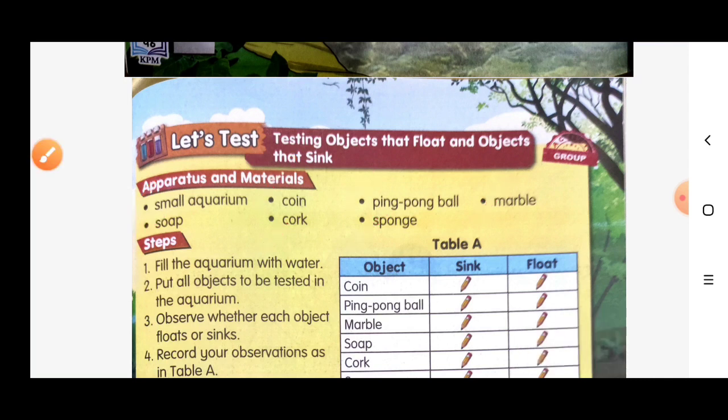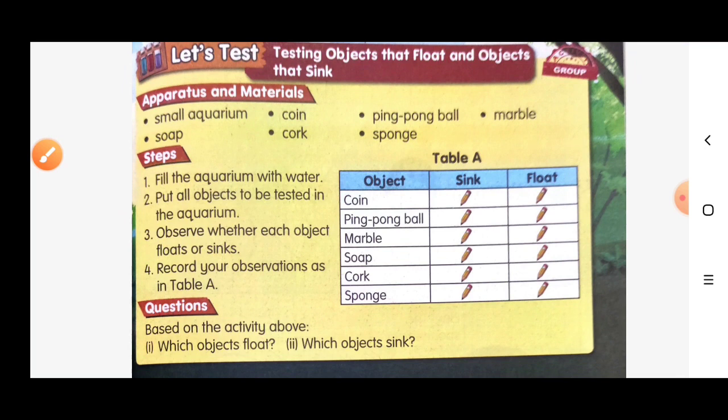Firstly, fill the aquarium with water. Number two, put all objects to be tested in the aquarium. Number three, observe whether each object floats or sinks. Number four, record your observation in Table A. Observation means pemerhatian.